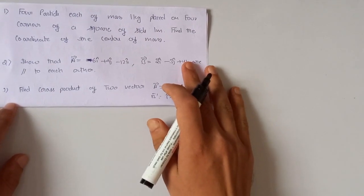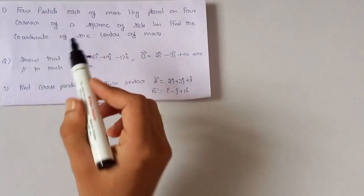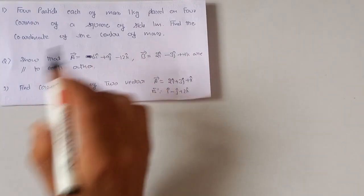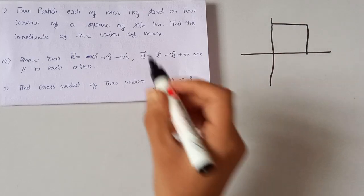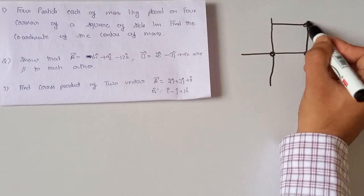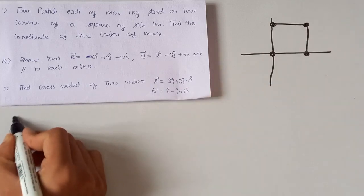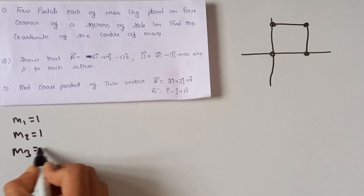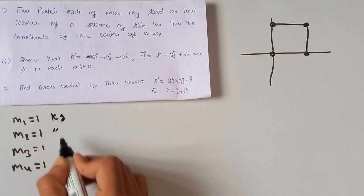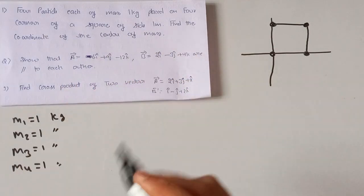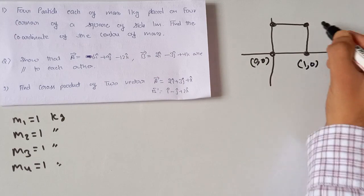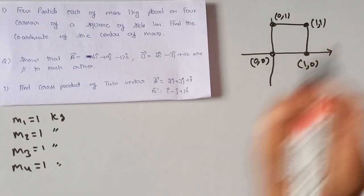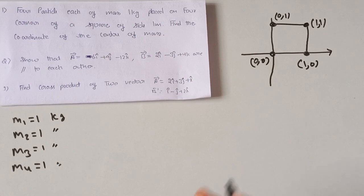Now we will do some numericals. Our first numerical: four particles, each of mass 1 kg, are placed at the four corners of a square of side 1 meter. The coordinates are: M1 at (0,0), M2 at (1,0), M3 at (1,1), and M4 at (0,1). Find the coordinate of the center of mass.